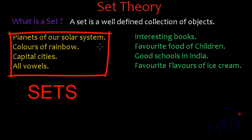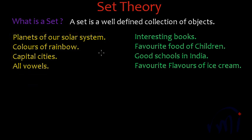How do we represent a set? Suppose I write all the colors of the rainbow and name this set C. All the elements of this set will be written in curly brackets, also called braces. The colors are: V for violet, B for blue, I for indigo, G for green, Y for yellow, O for orange, and R for red. These seven will be the elements of this set. No other color like lavender, lilac, or peach will belong to the set of colors of the rainbow.